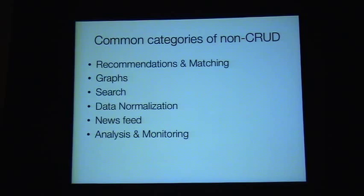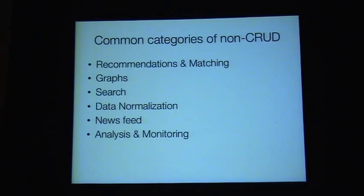Graph stuff tends to create a lot of pressure on data systems because when you traverse a graph, where you go next always depends on where you just landed — a very hard access pattern. Search is kind of the core new-SQL system — nobody wants to do their search in a relational database anymore, so you end up with specialized distributed systems. Data normalization is something not talked about much: when you take data from your users and try to make a pristine model of something in the world. Netflix does this — they've totally modeled the movie space with directors, actors, seasons.